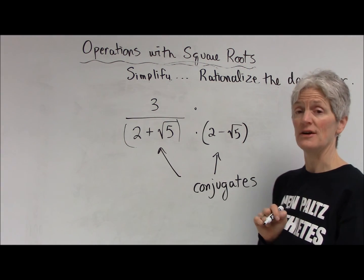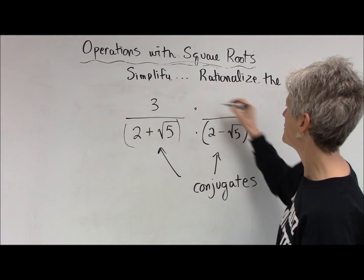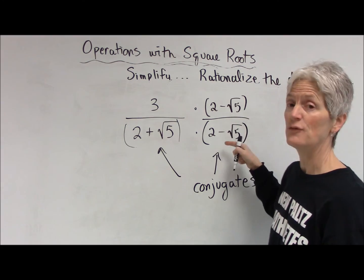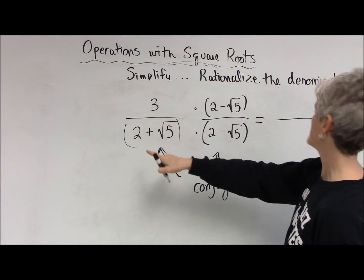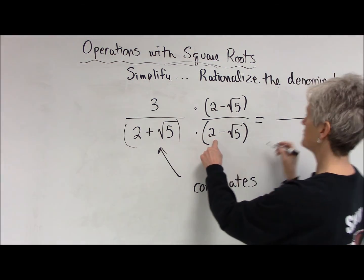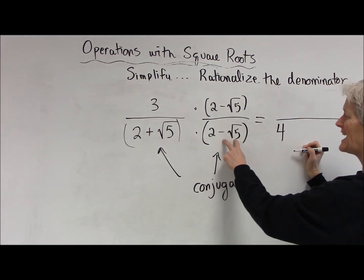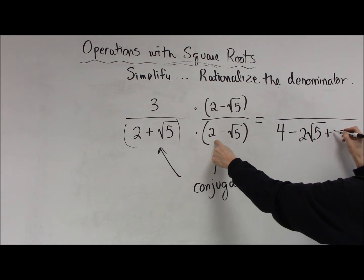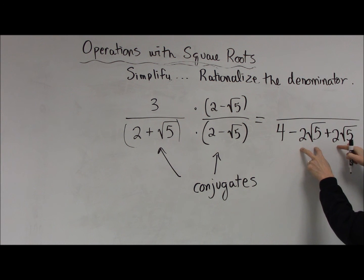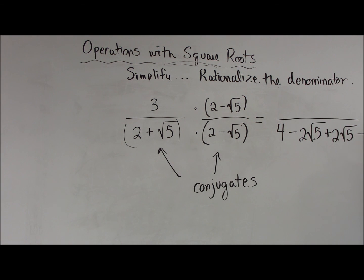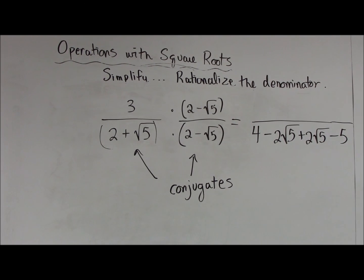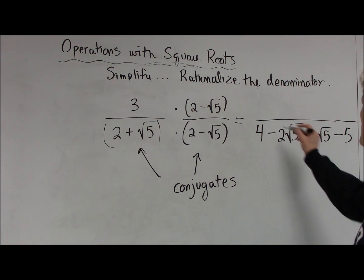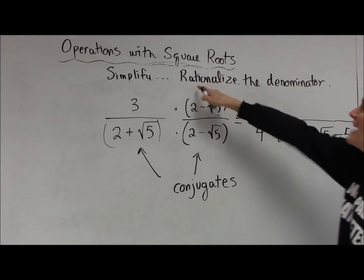I need to multiply by something that would get rid of all the radicals. If you play around a little bit, you'll discover that if I multiply this binomial by what we call its conjugate, that will accomplish what we want. If I have two numbers added together, the conjugate is those two numbers with a subtraction — these are conjugates of each other. I have to multiply the whole fraction by a fancy form of 1. In the denominator: 2 times 2 is 4, 2 times negative root 5 is negative 2 root 5, root 5 times 2 is positive 2 root 5, and square root of 5 times negative square root of 5 is negative 5. Those two middle terms undo each other — that's what rationalizes the denominator.